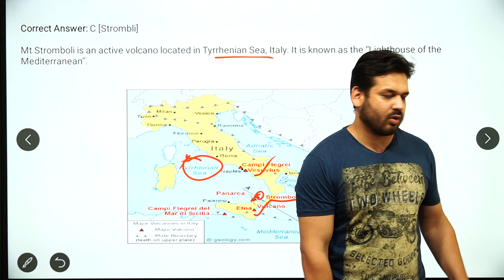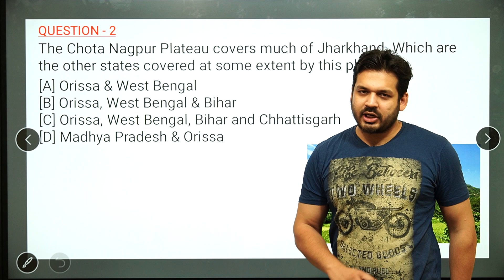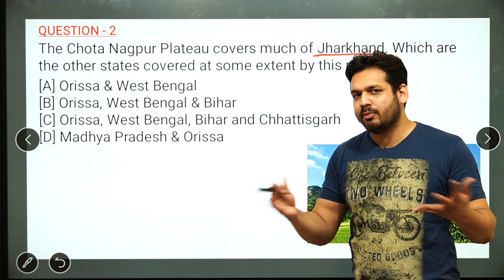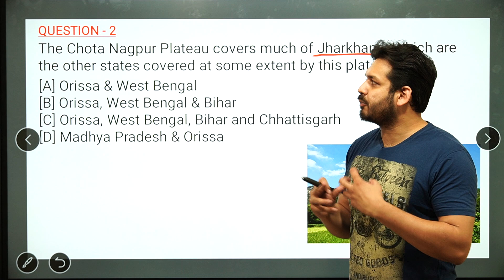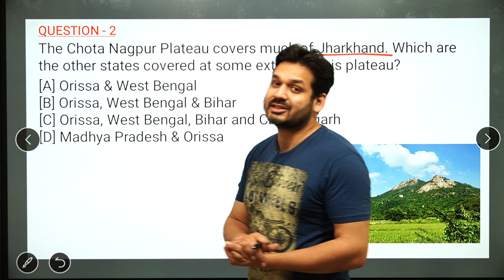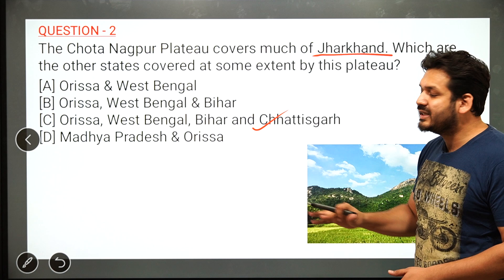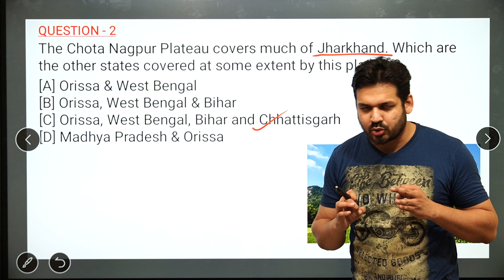Next question — whenever Chhota Nagpur Plateau is discussed, we focus on Jharkhand. But the question asks which other states share boundaries with the Chhota Nagpur Plateau. The answer includes Odisha, West Bengal, Bihar, and Chhattisgarh — all these states touch the plateau.